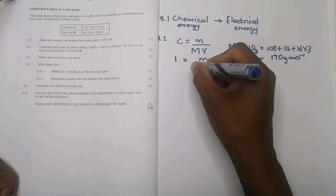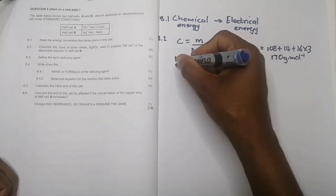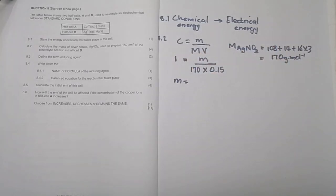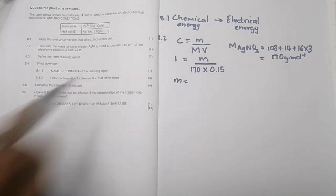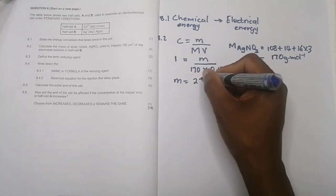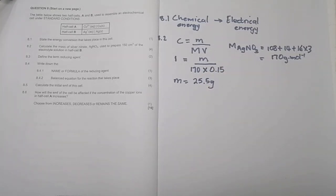Now for the mathematical calculation: mass = concentration × molar mass × volume = 1 × 170 × 0.15 = 25.5 grams. Please verify this, but that is the answer.